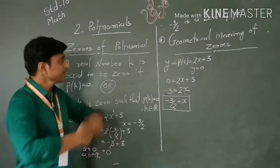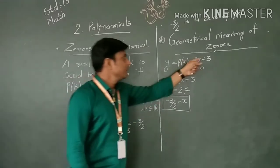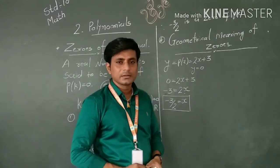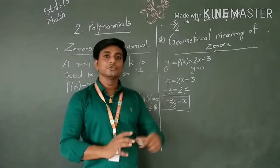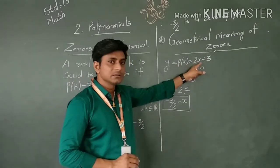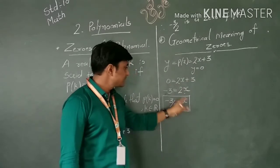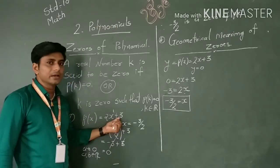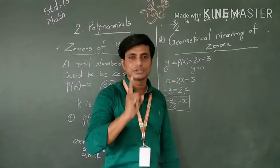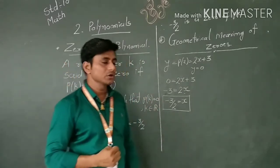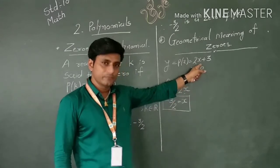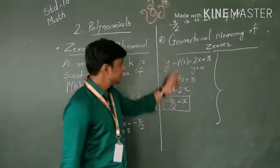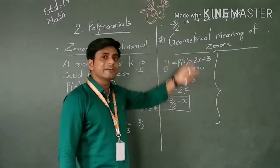Now, the geometrical meaning: if we consider y equal to 0, we get x equal to minus 3 upon 2. As you all know, linear polynomials have a unique solution — that means one value of x, which is minus 3 upon 2. Moreover, linear polynomials have only one zero, not two or three, because the power is 1.